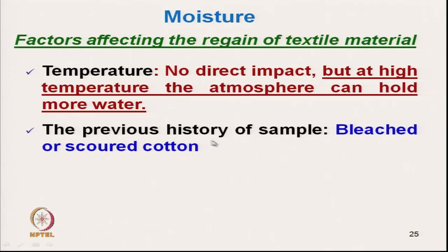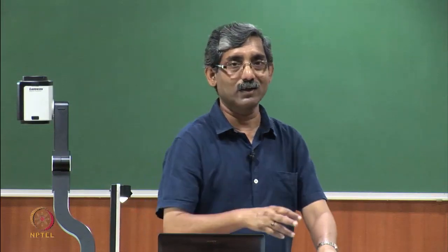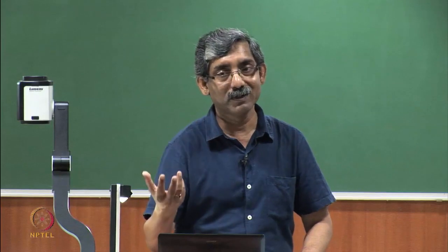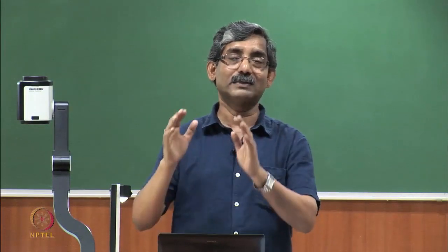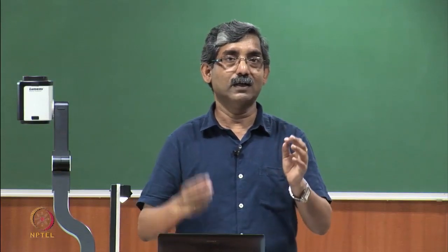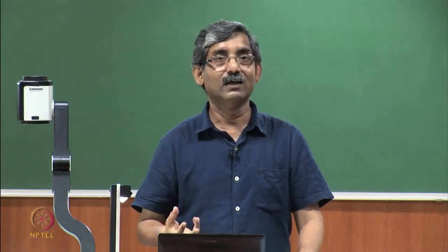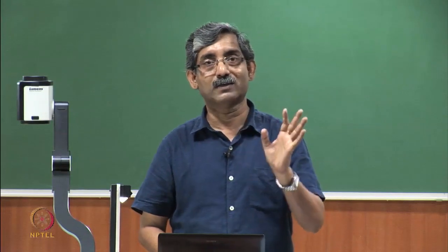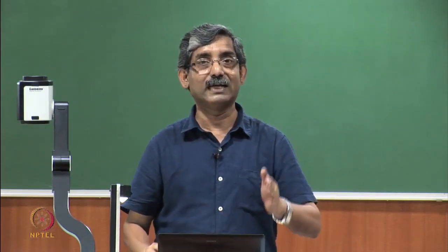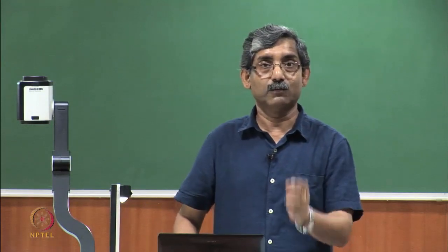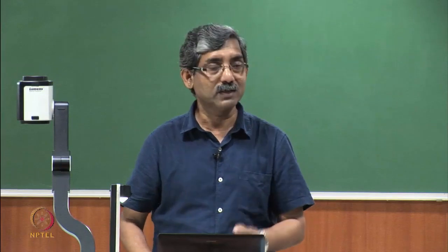Another factor is the previous history of the sample: moisture regain or moisture content will change if the material is bleached or scoured. Raw cotton kept in a standard atmosphere will absorb a certain quantity of moisture, say 8.5%, but it has some wax material and other impurities. If we bleach or scour the cotton, the moisture regain or moisture content will change because of the removal of the wax material. So moisture changes with the previous history of the material.